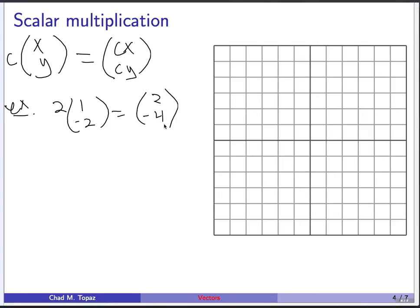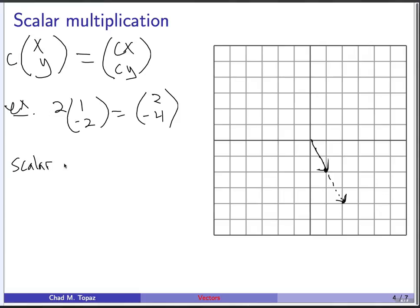Let's draw that geometrically. I'll draw the vector (1, -2) — that's this vector here. Then I'll draw the vector (2, -4): that's 2 over and 4 down — that's this vector here. What you see is that you get a copy of the original vector but twice as long. So the scalar multiple stretches, or if it's smaller than 1, it shrinks the original vector.